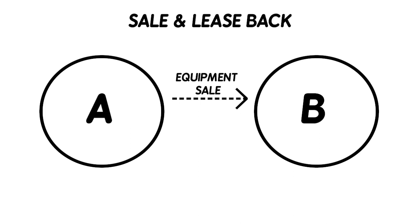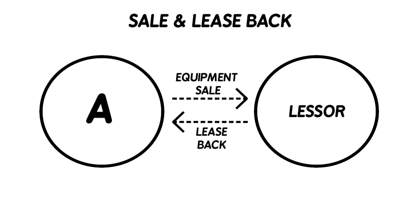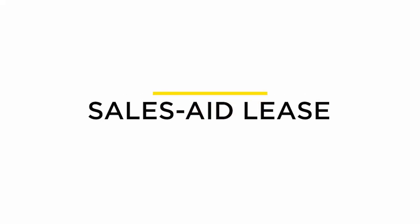In a sale and lease back transaction, the equipment is first sold to another party, and immediately the equipment is taken back on a lease. The party who bought the equipment is the lessor, while the party who sold and took it back on lease is the lessee. In a sales aid lease, the lessor and the equipment manufacturer or seller have a predefined agreement — the lessor will help the seller in marketing the product, and in return the lessor will get the asset at a lower price.